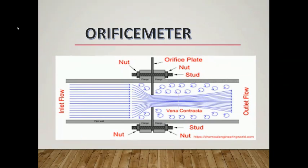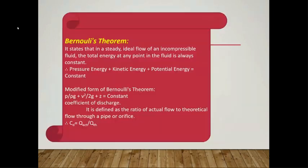At the vena contracta, it is the space where the diameter is least, fluid density is maximum, and fluid velocity is maximum.